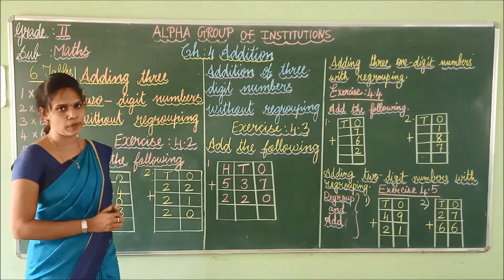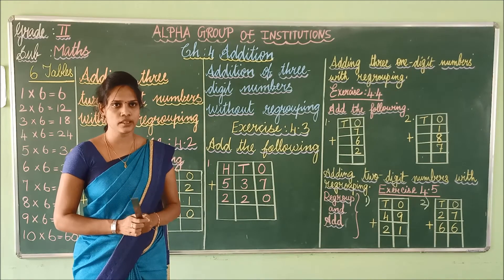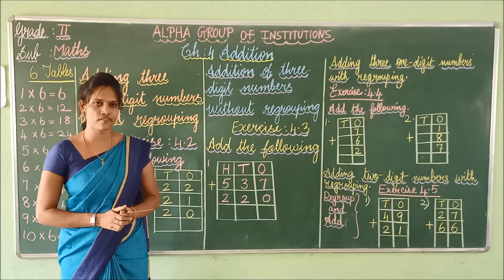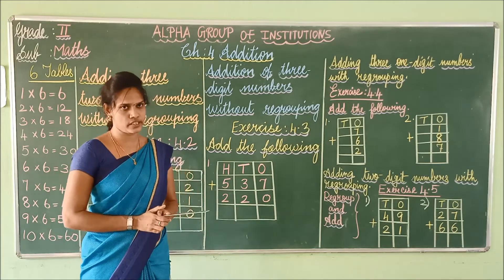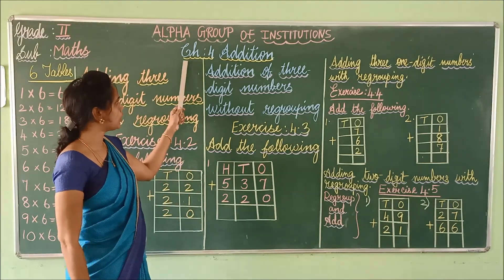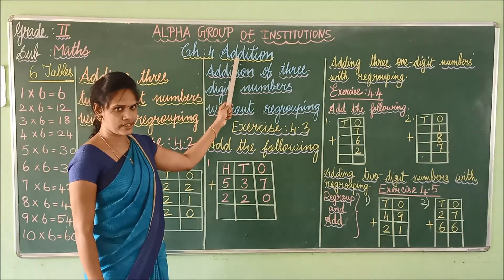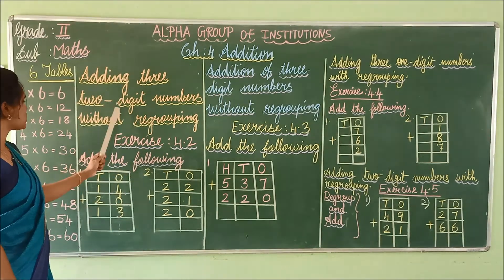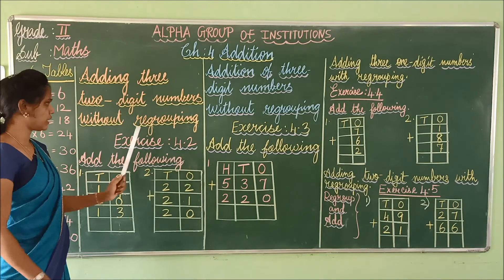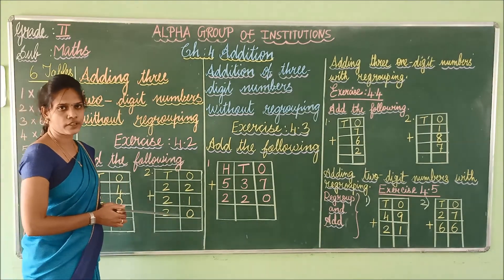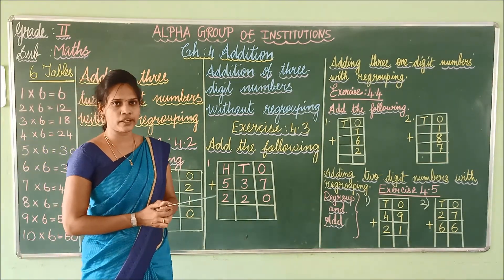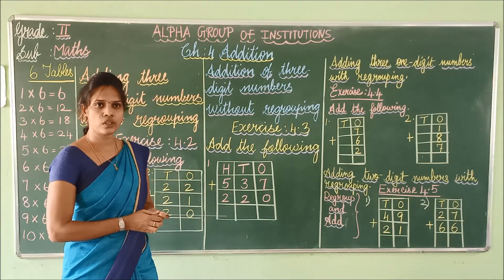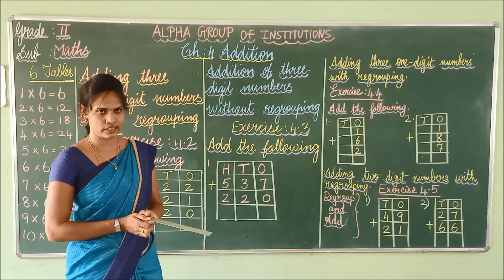Okay children, you have to practice the 6 times table. Shall we move on to the chapter now? In last class we have seen Chapter 4 Addition. So today also we are going to continue Chapter 4 Addition. Today we are going to see without regrouping and with regrouping. I will tell you the difference between without regrouping and with regrouping.